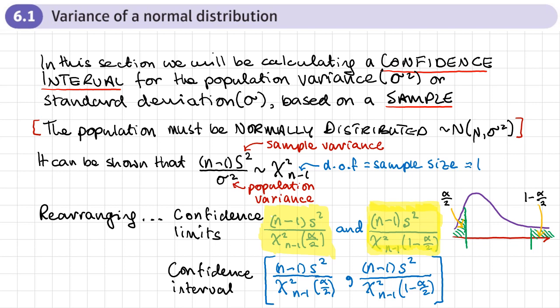If we rearrange the formula, we can get our confidence limits as (n-1) times by little s, because we'll actually work out our sample variance, divided by a chi-square distribution with n-1 degrees of freedom.